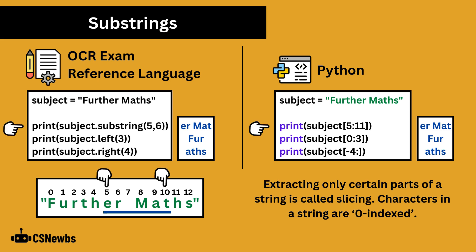In OCR ERL, substring can be used to extract certain characters. The first number, in this example 5, is the index of the character to start with and the second number is how many characters to include.